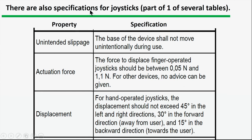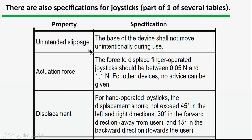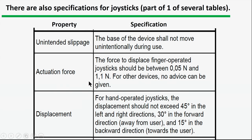Here's another example — this one happens to be for joysticks. Some specifications are fairly general, but then there are specific ones. For a finger-operated joystick, you want between 0.05 and 1.1 Newtons of force — a quite wide range. For displacement, the joystick should not move more than 45 degrees left or right, 30 degrees forward, and 15 degrees aft.